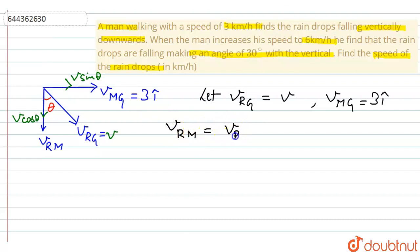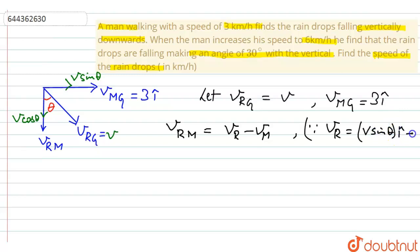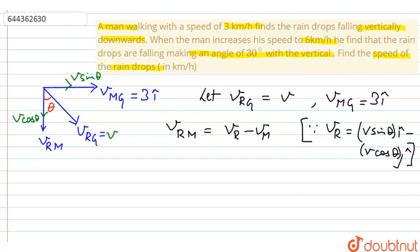I can write the velocity of rain with respect to man equals v_r minus v_m. Since v_r equals v, I can write the total v_r components as: v sine theta i-cap minus v cos theta j-cap. We can mark this as equation number 2, and the first relation as equation number 1.